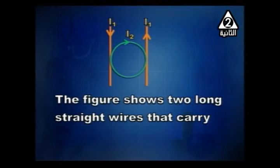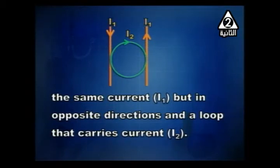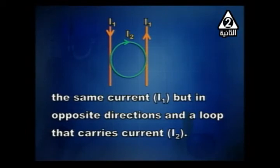Problem: The figure shows two long straight wires carrying the same current I1 but in opposite directions, and a loop carrying current I2. When two wires carry currents in opposite directions, the magnetic field in between the two wires will have the same direction — the two fields from the wires in between them point in the same direction.